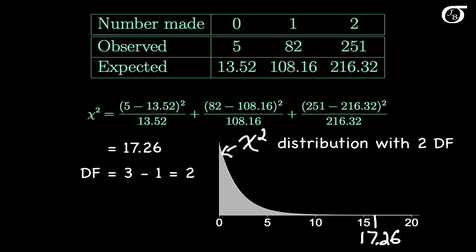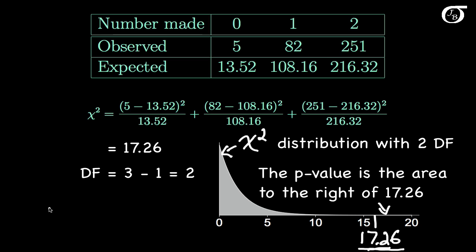The larger the value of the test statistic, the greater the evidence against the null hypothesis. If the observed counts are very different from the expected counts, the test statistic gets large. The p-value is the probability under the null hypothesis of getting this value or something even larger — the area to the right of 17.26. Using software, that p-value is approximately 0.0002.